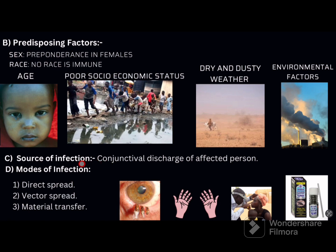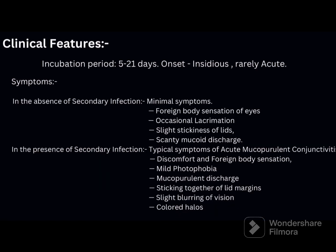The mode of infection can be direct spread, vector spread, or material transfer. Direct spread is through airborne or waterborne modes; vector transmission is through flies. Material transfer can occur through contaminated fingers of doctors and nurses, contaminated tonometers, common towels, handkerchiefs, beddings, and surma rods.